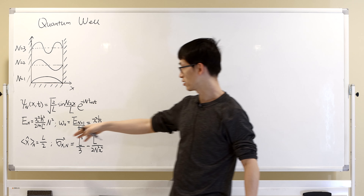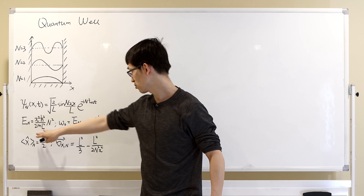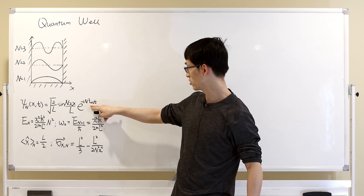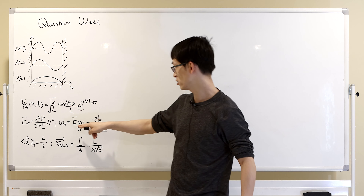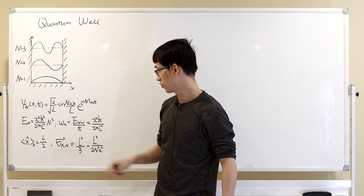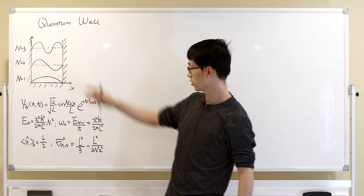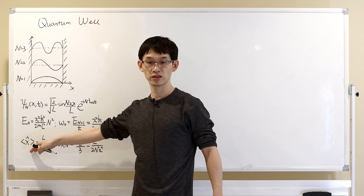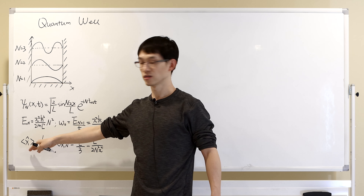Let's come back with the quantum well. In the previous class, we solved the Schrödinger equation, the eigenstate for the quantum well. The eigenstate is here, the eigenenergy is this one, and there's a fundamental frequency you can define as the frequency of the ground state.